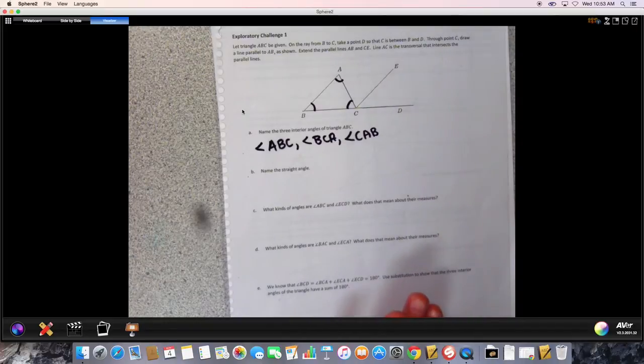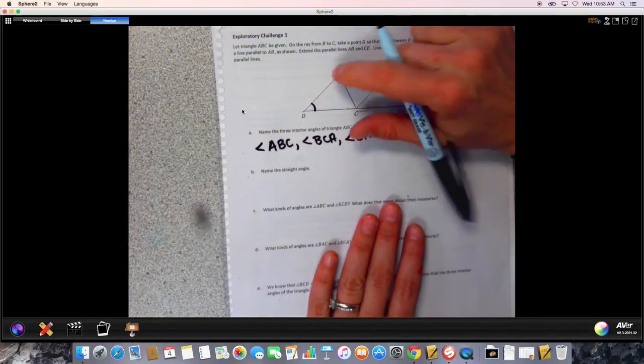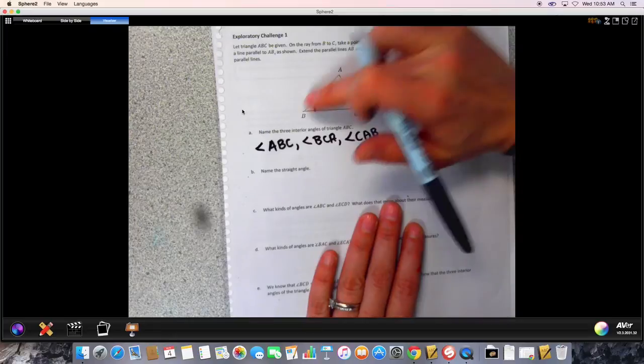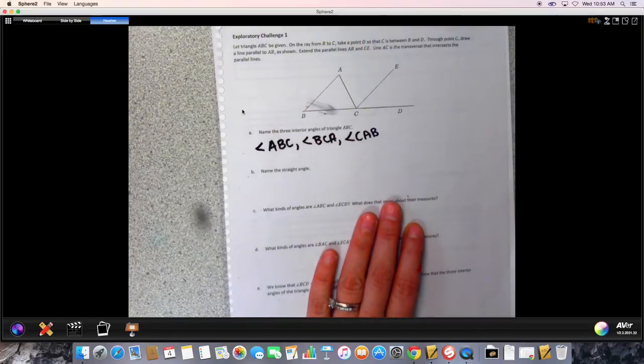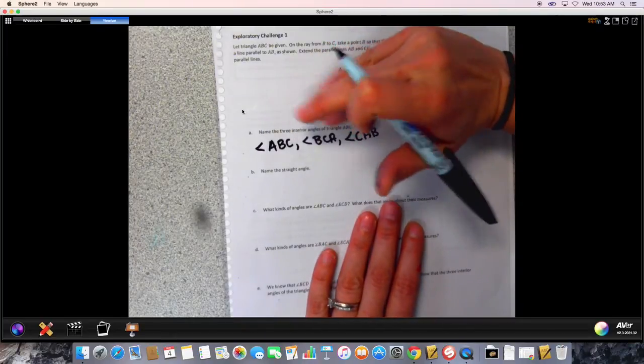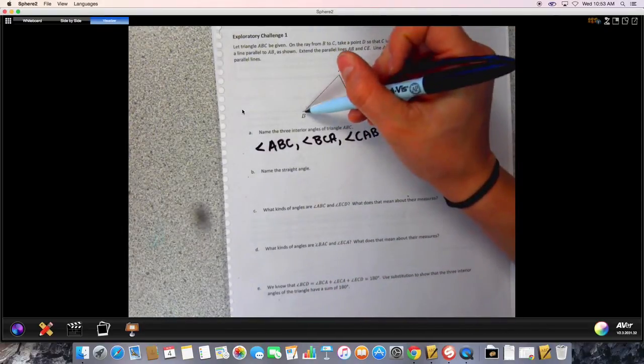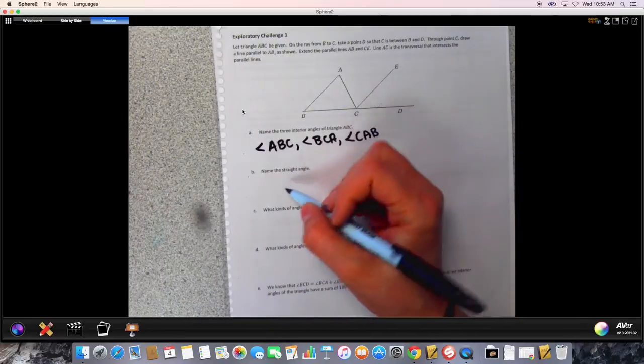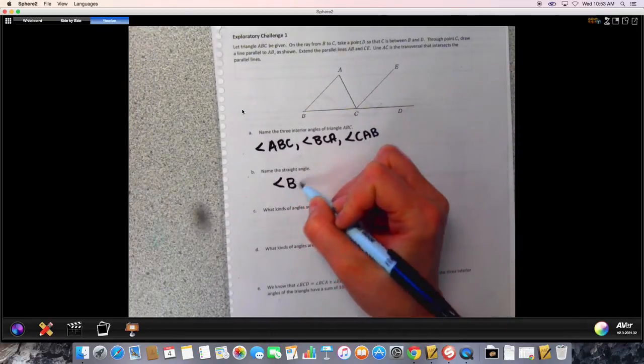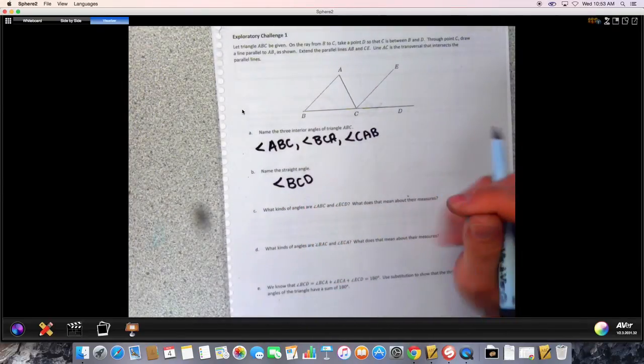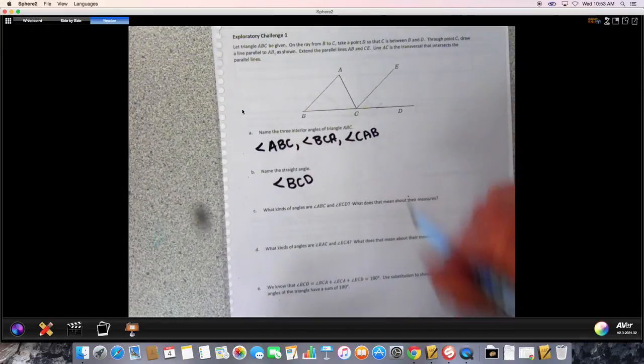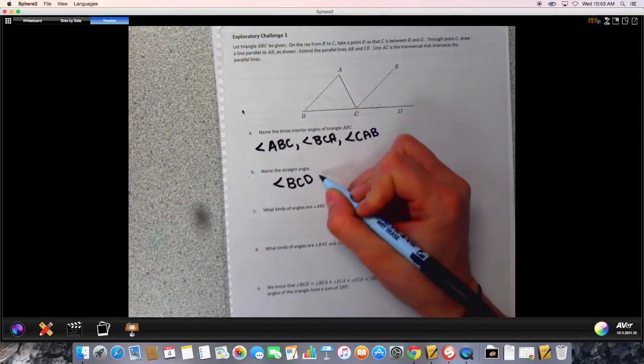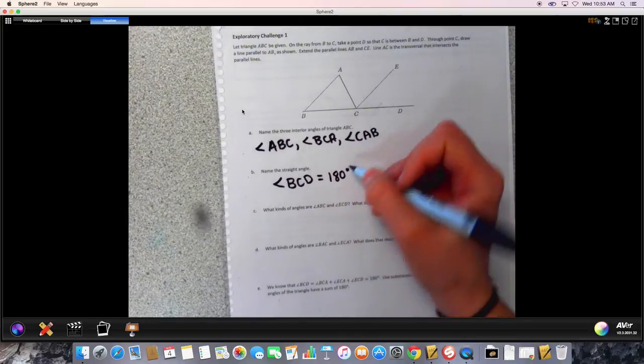Part B says name the straight angle. The straight angle here is going to be angle BCD. Let's remind ourselves that a straight angle or a straight line is equal to 180 degrees total.